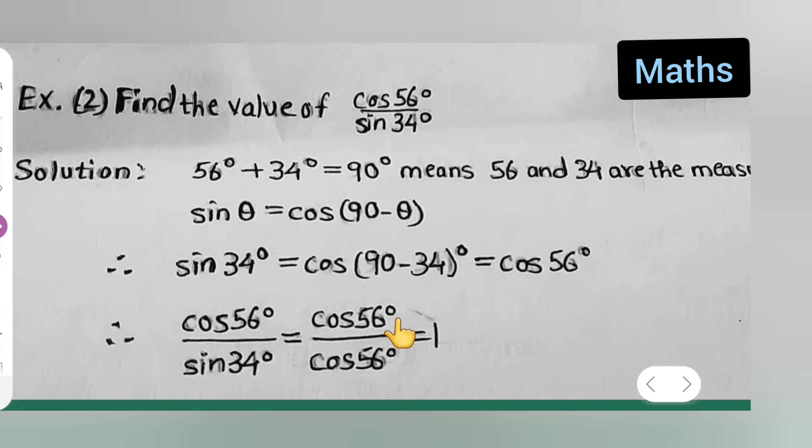Which is equal to cos of 56 degree. Write it as it is. Now sin of 34 degree, what I got is cos of 56 degree. So plug the value instead of this, cos of 56.